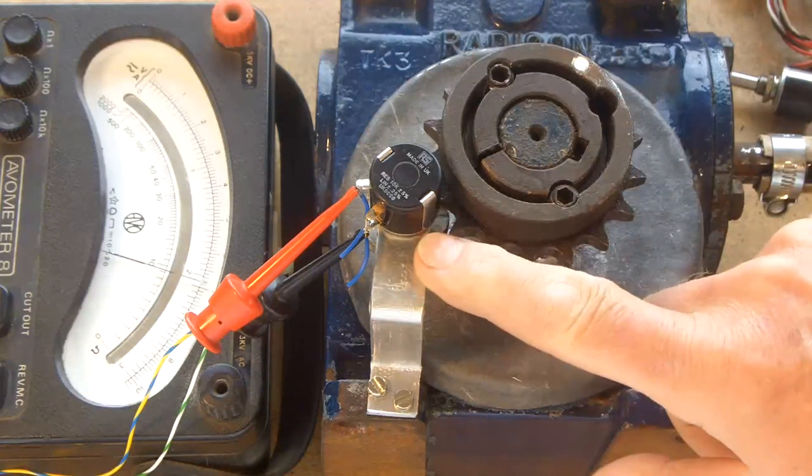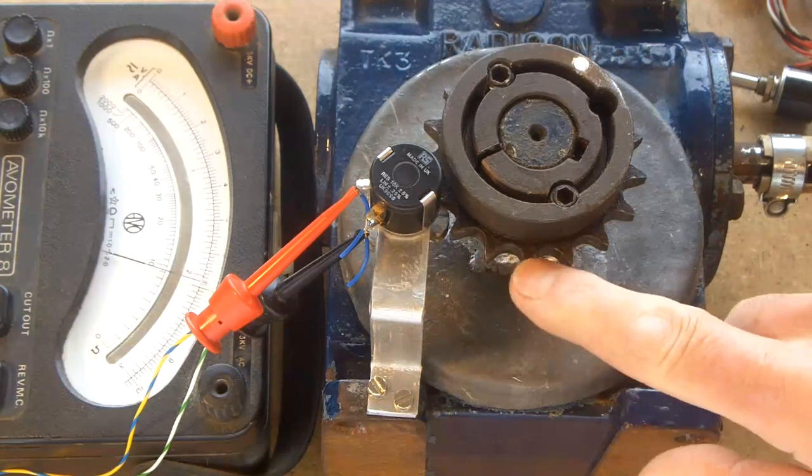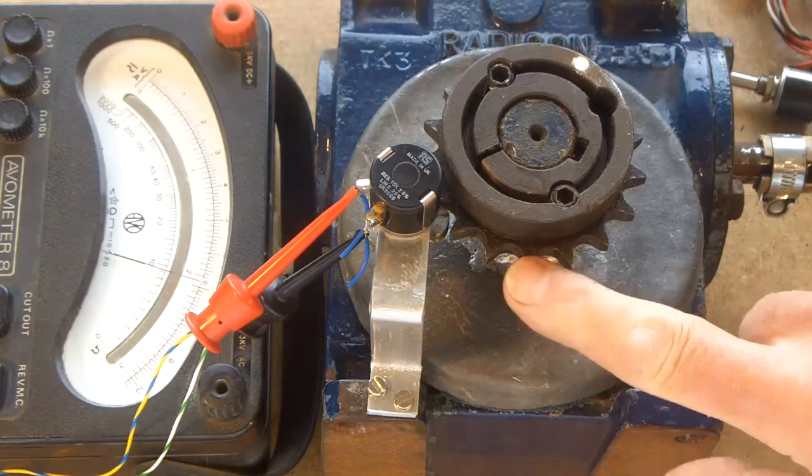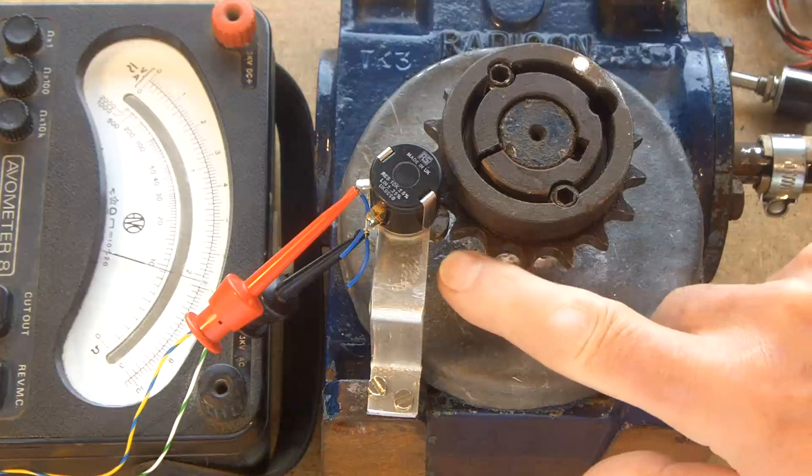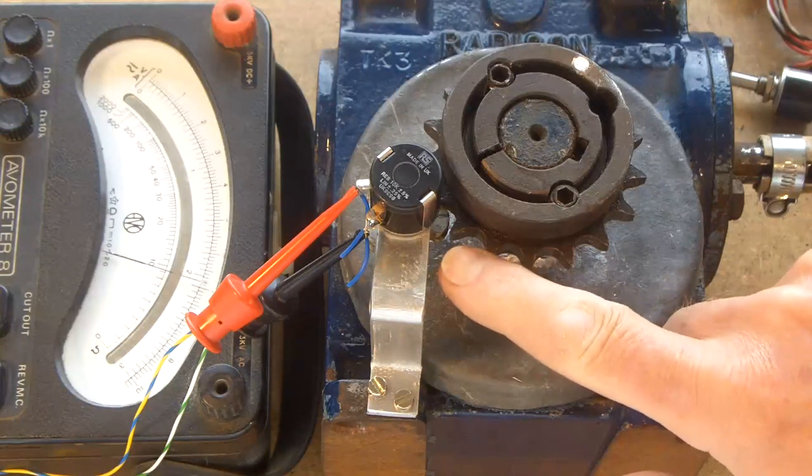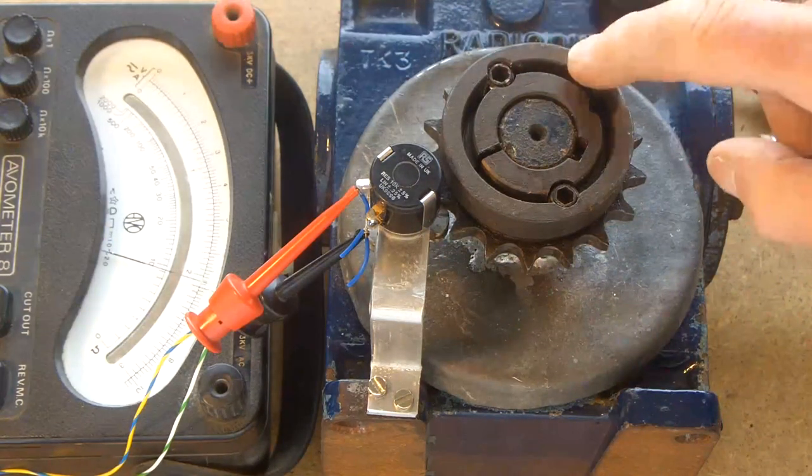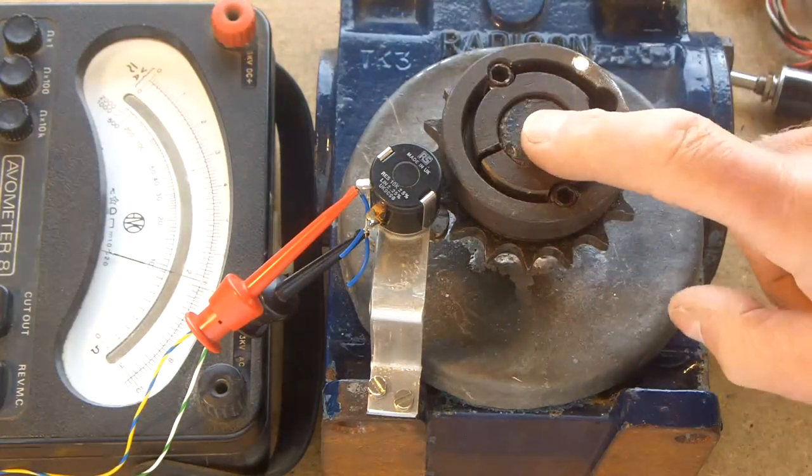The little gear on the end of the potentiometer has 5 teeth and this cog has 17, so 17 divided by 5 gives me a gear ratio of 3.4 to 1. So for each revolution of this gear, that's going to go around 3.4 times.